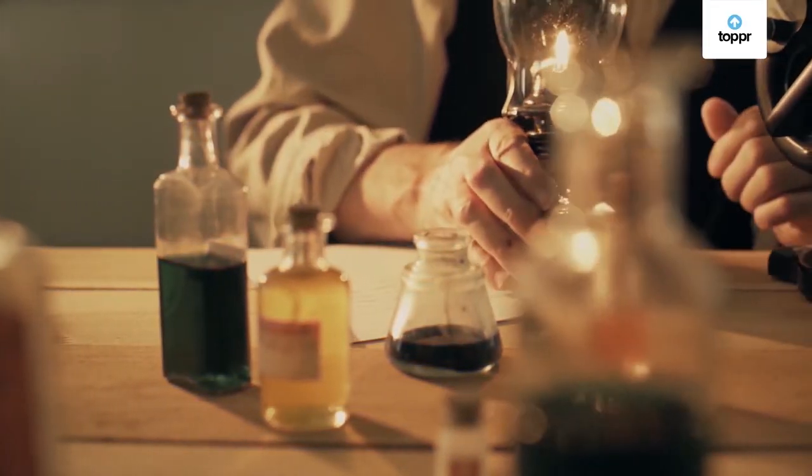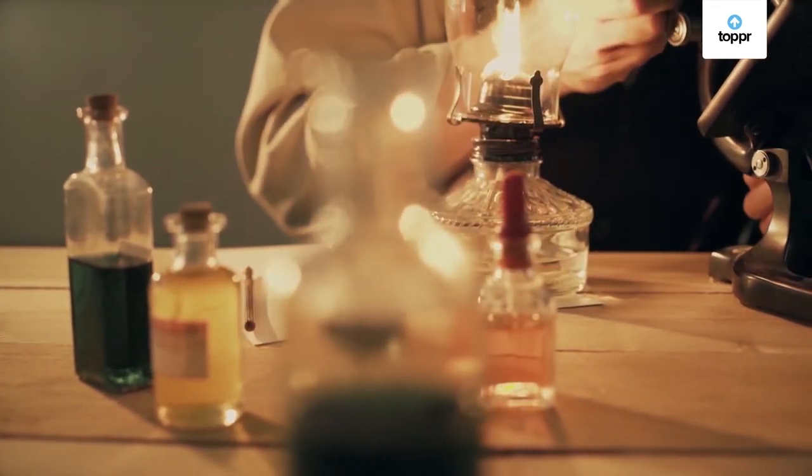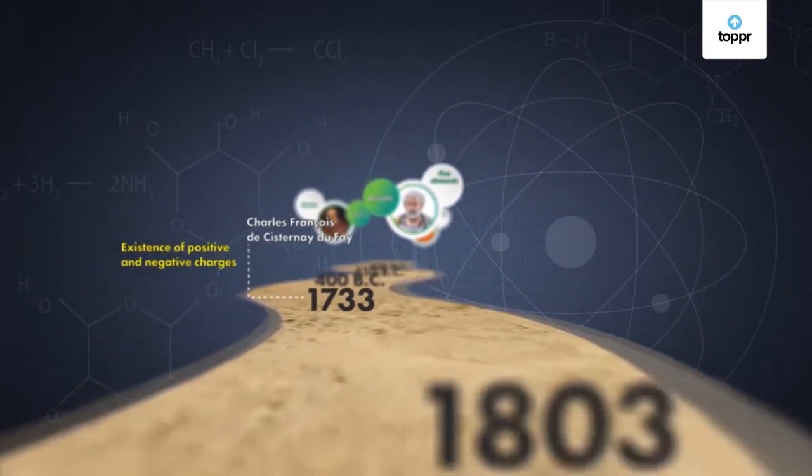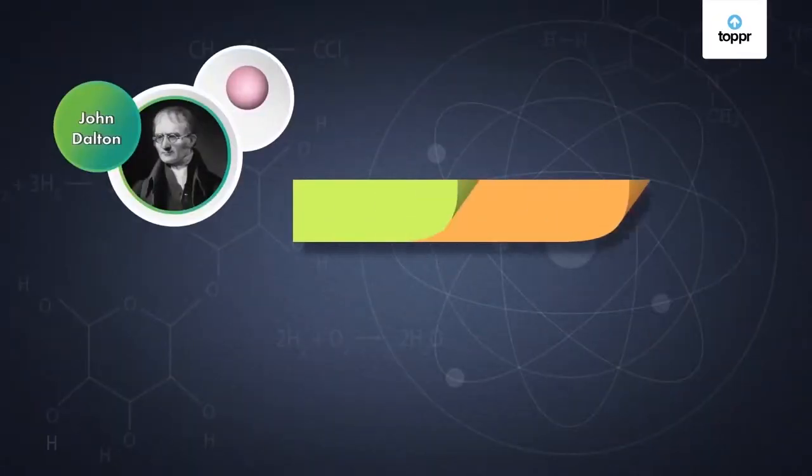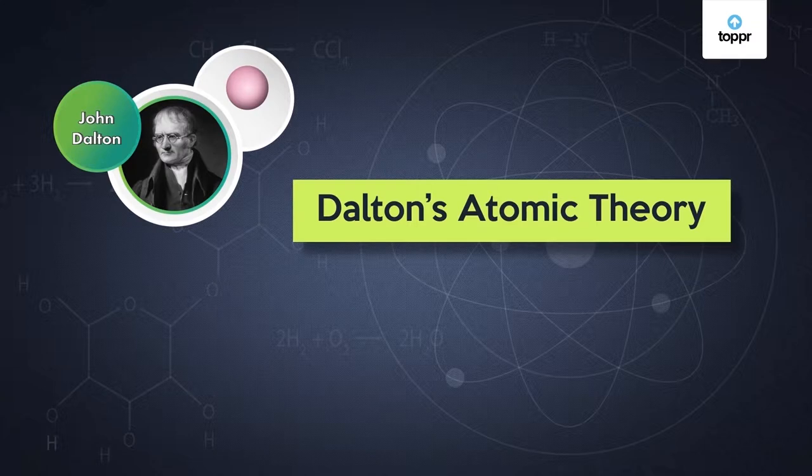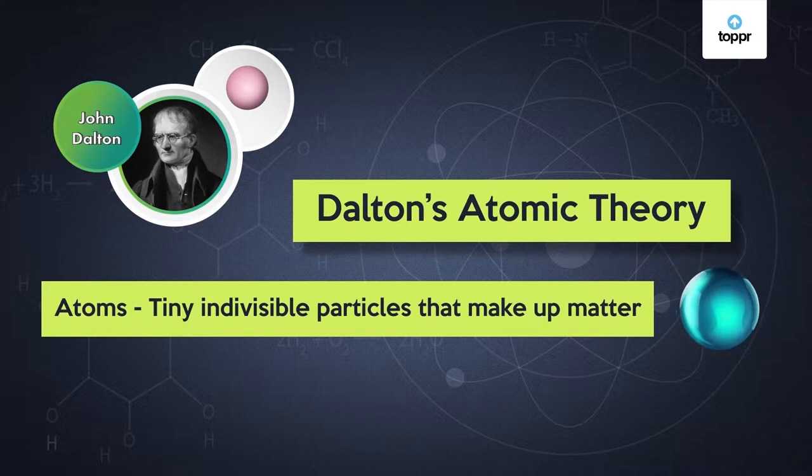Scientists began experimenting with different materials to understand what actually makes up matter. At the turn of the 19th century, Dalton gave us the first ever atomic theory based on his experiments with gases. This theory proposed that all matter is made up of tiny indivisible particles which he called atoms. He imagined them as solid balls.